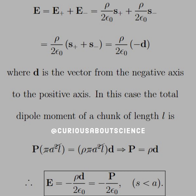From here, we can see what the total dipole moment of a chunk of length L is. With more cancellations, we get that the polarization is rho times the displacement vector d. So we have the electric field inside the cylinder expressed in terms of rho, the displacement vector, and the polarization.